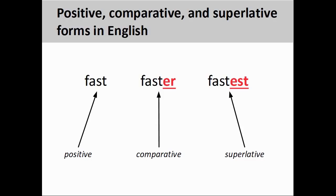Adjectives are words that describe or modify another person or thing in a sentence. When an adjective is used to describe one person or thing, the positive form of the adjective is used. As you see on the screen, the adjective 'fast' is in the positive form. The positive form can be considered the standard or base form of an adjective.